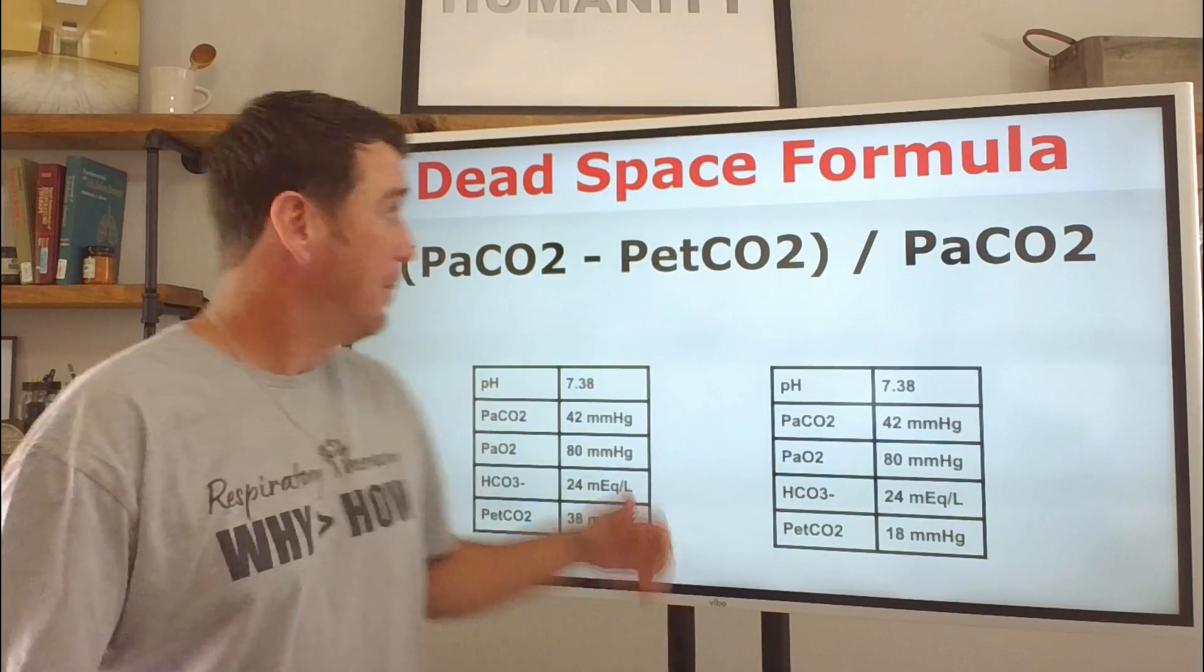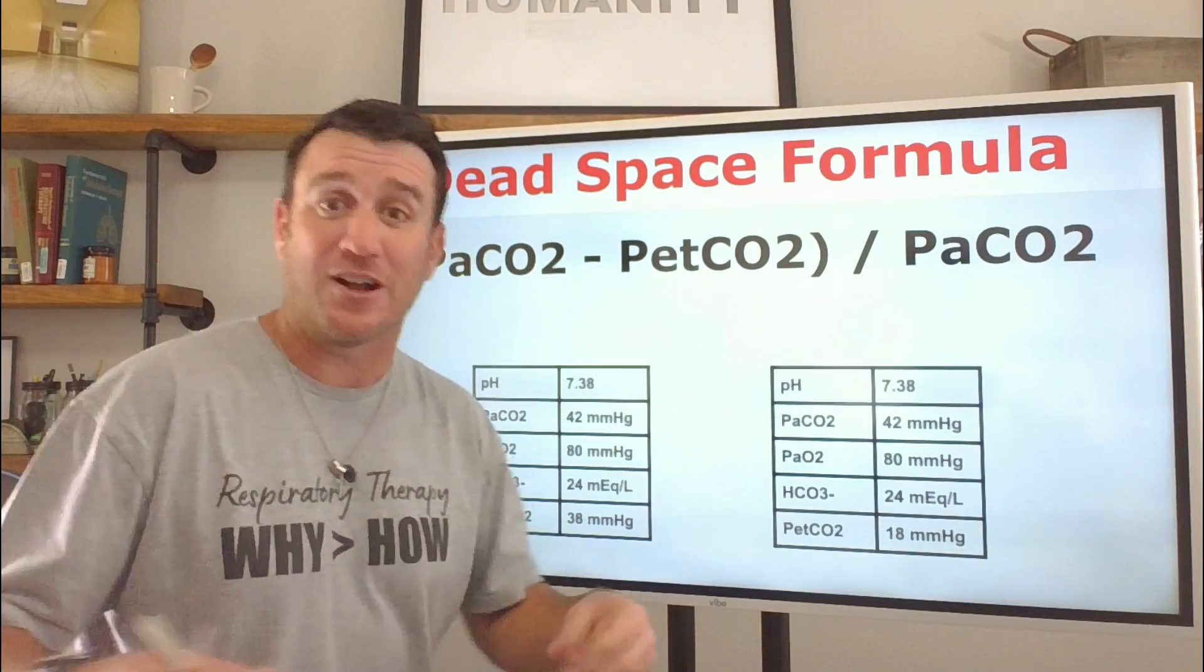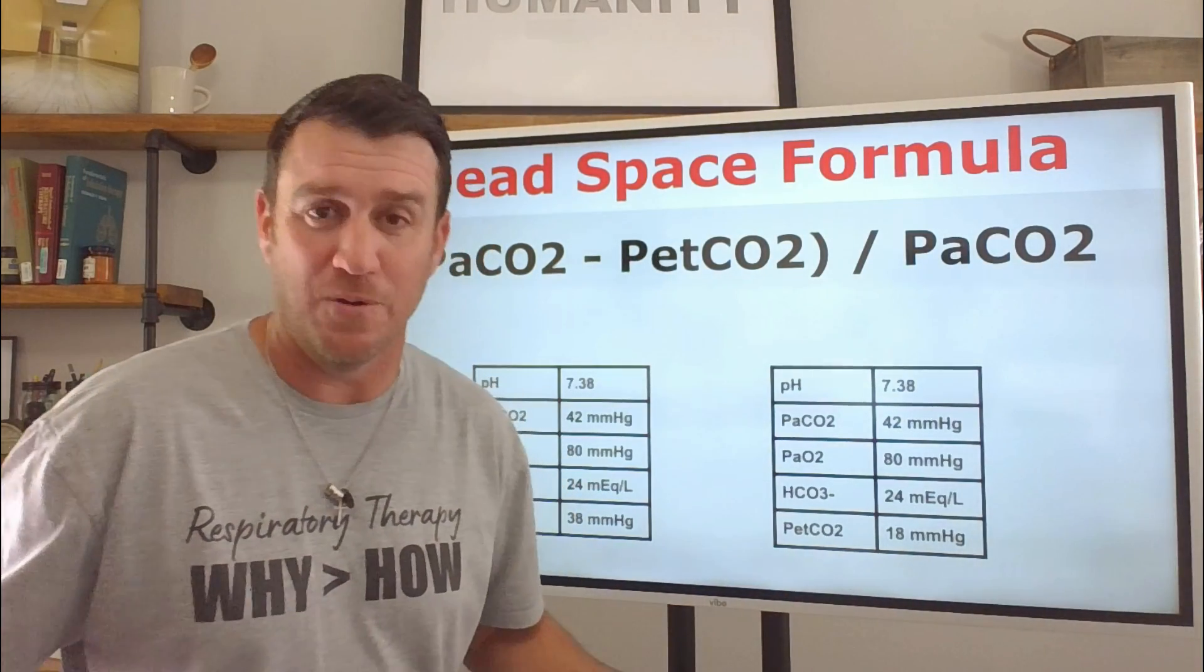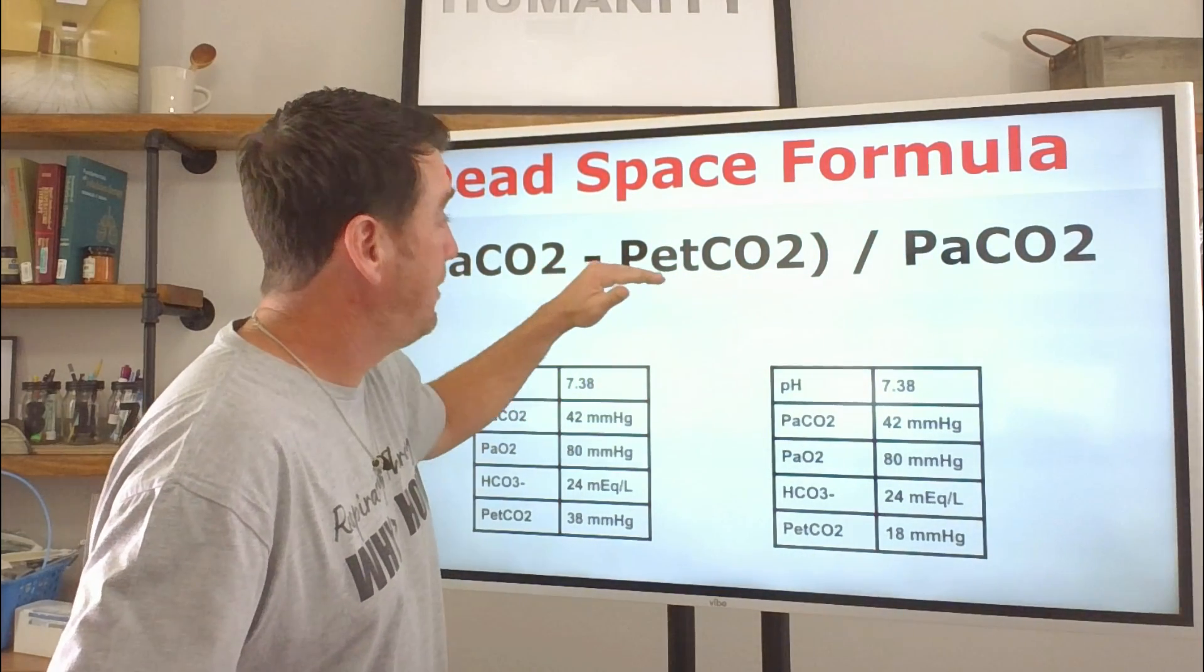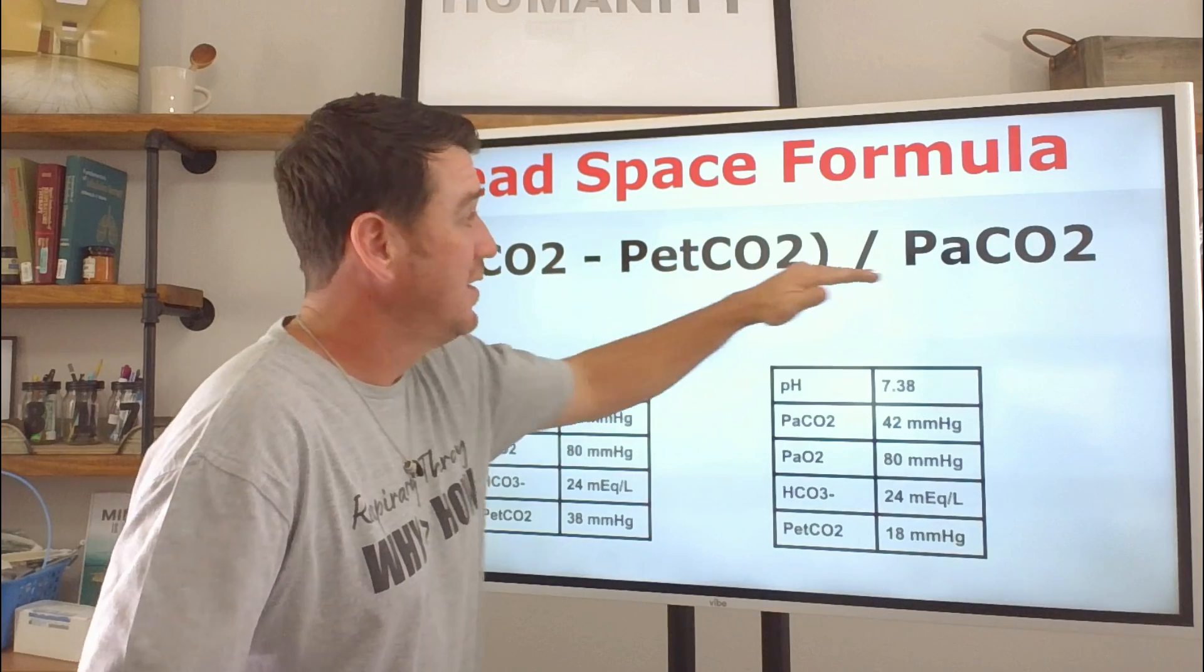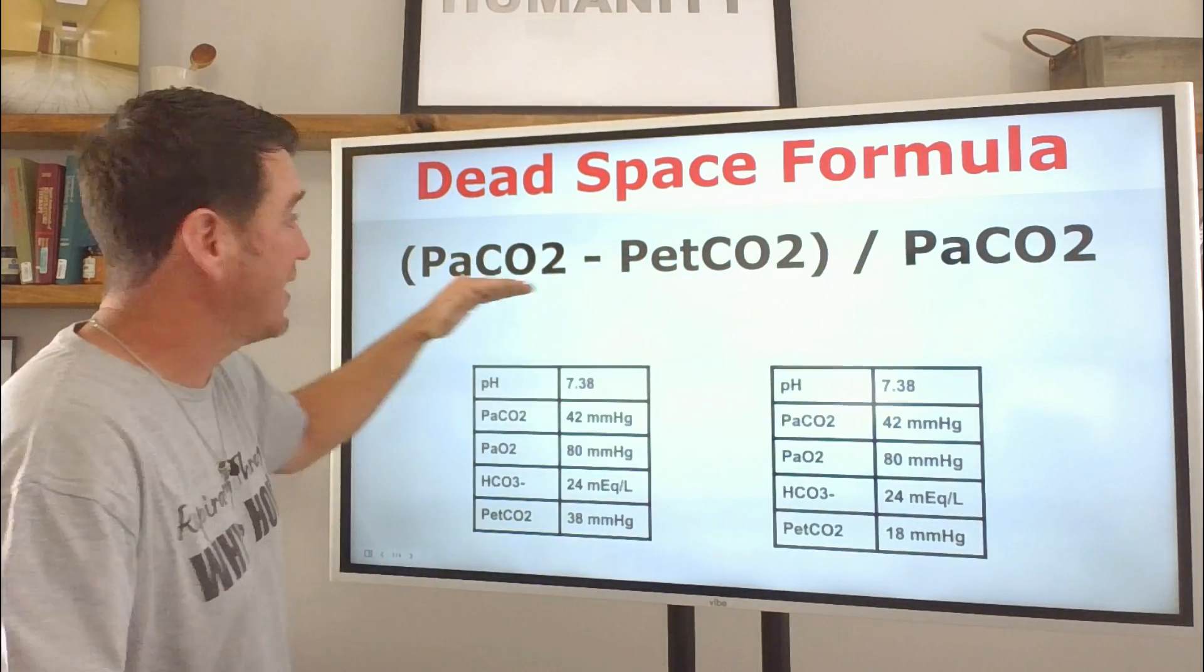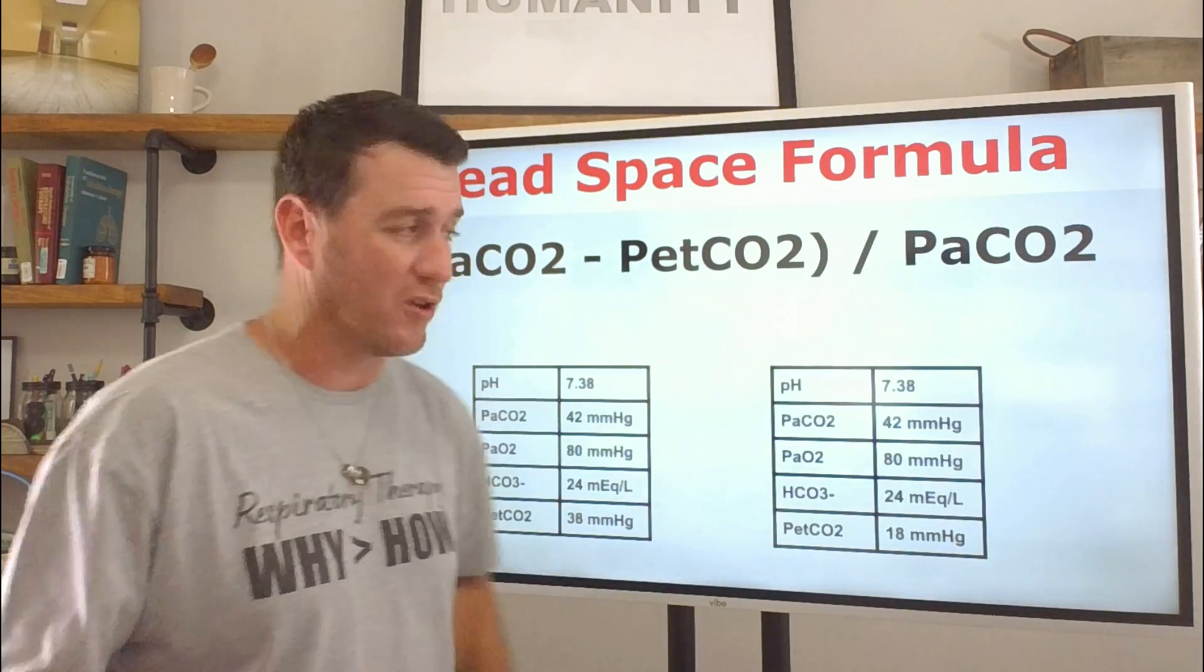Well, PaCO, what is it? PaCO is P-A-C-O-2. Now, we don't say PaCO2. We just say PaCO. And we don't say PetCO. We just say partial pressure end tidal CO2. PetCO divided by PaCO. So PaCO, PetCO, PaCO. That's the formula you need to remember.